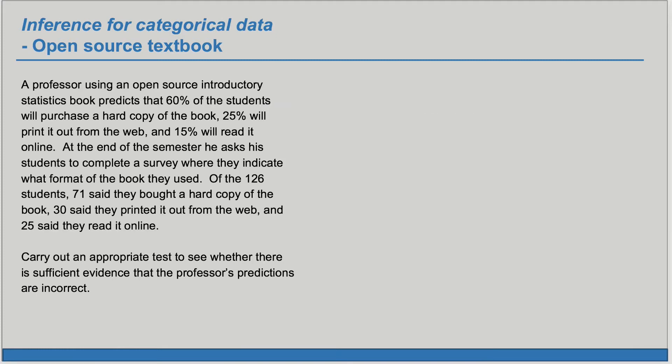A professor using an open-source introductory statistics book predicts that 60% of the students will purchase a hard copy of the book, 25% will print it off on the web, and 15% will read it online. At the end of the semester he asks his students to complete a survey where they indicate what format of the book they use. Of the 126 students, 71 said they bought a hard copy of the book, 30 said they printed it off on the web, and 25 said they read it online. Carry out an appropriate test to see whether there is sufficient evidence that the professor's predictions are incorrect.